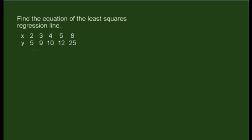In this problem, we're being asked to find the equation of the least squares regression line for the following set of paired data. So what we're going to do is go to our scientific calculator, drop everything into our list, and then find what we need.